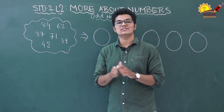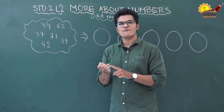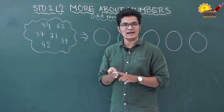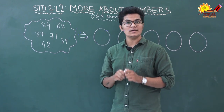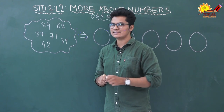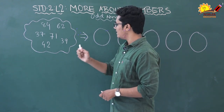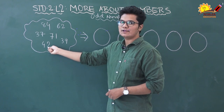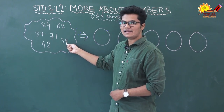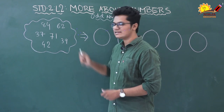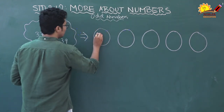We know that the number whose ones place has one, three, five, seven, or nine is an odd number, because we cannot make pairs from those numbers. Here, the ones place has two, so this is not odd — it is even. This number has nine in the ones place, so it is an odd number — thirty-nine.